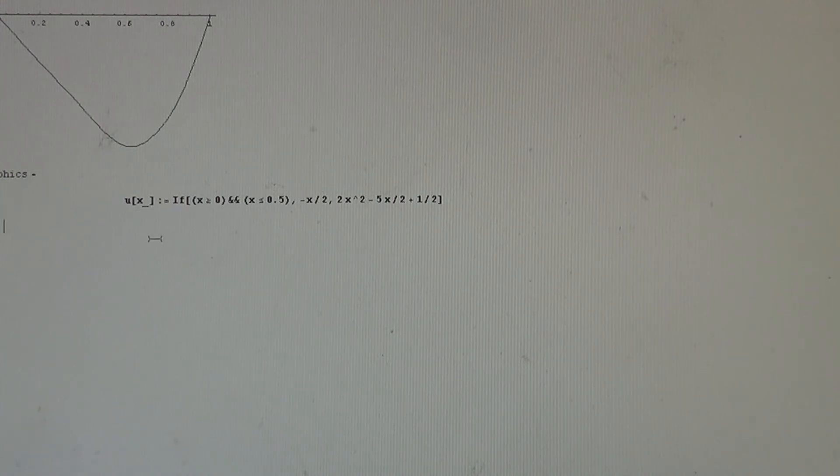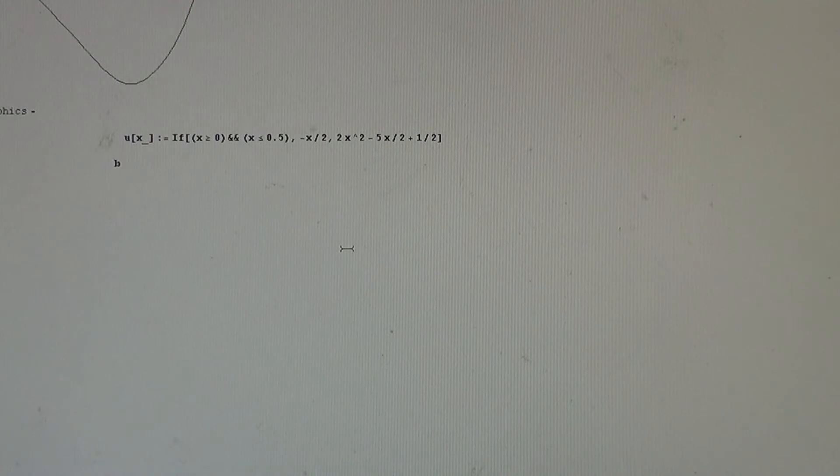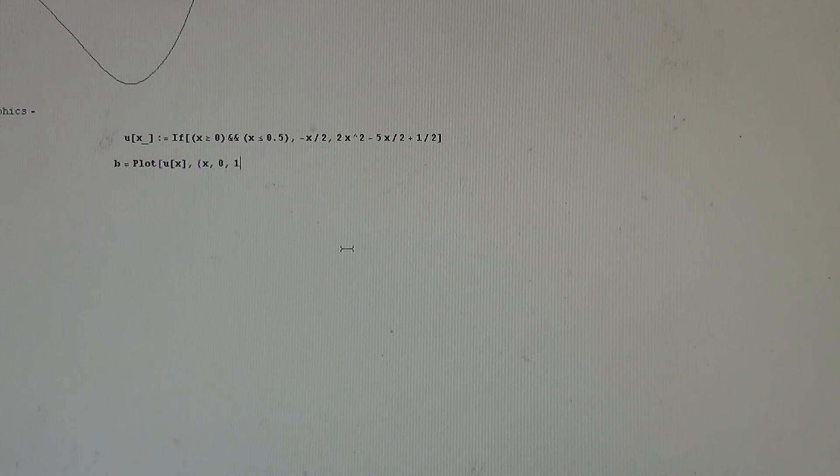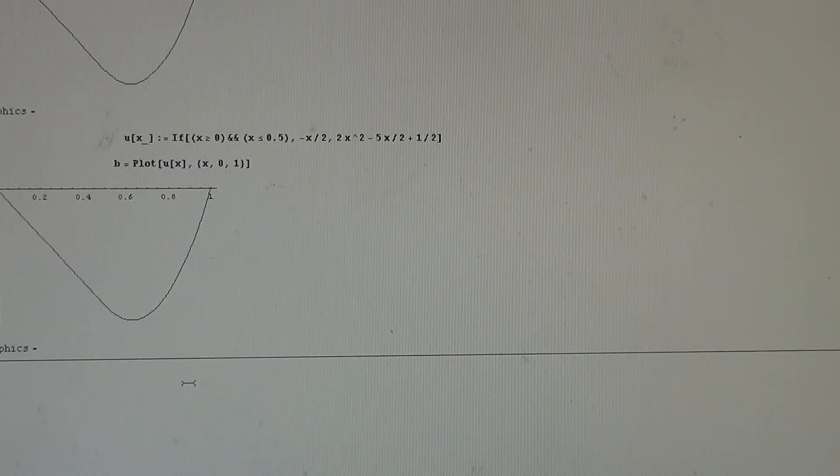And now we plot, we plot the exact solution. The exact solution, we plot, and put on the name A. A equals plot U of X with respect to X in the interval 0, 1. And we plot it. Almost the same, the same, almost the same.